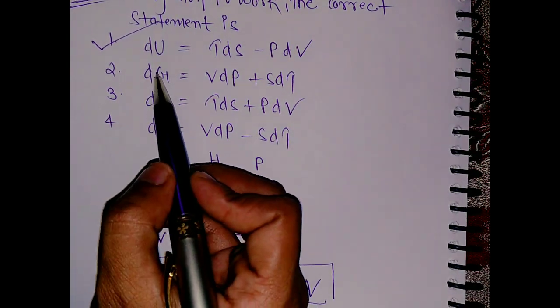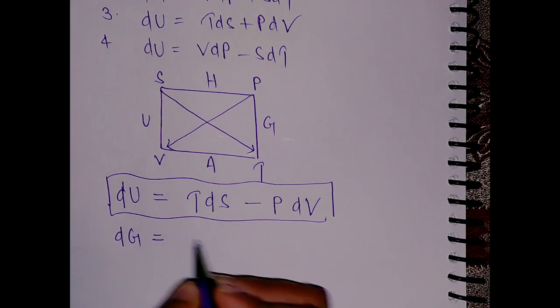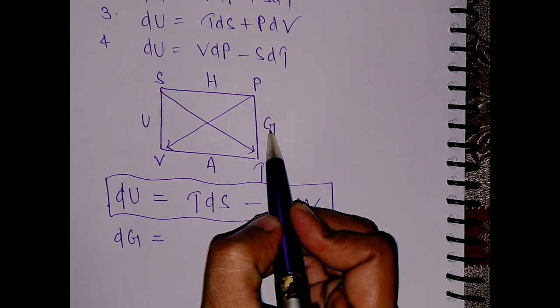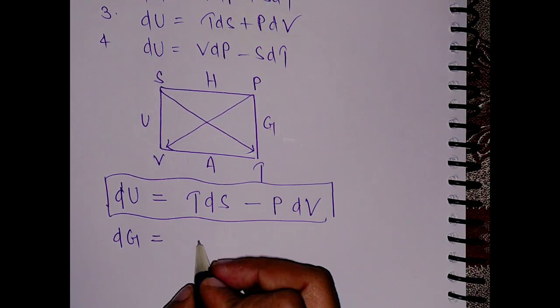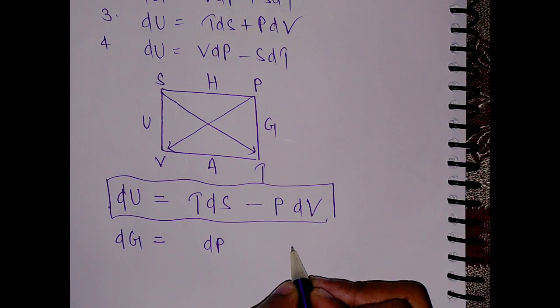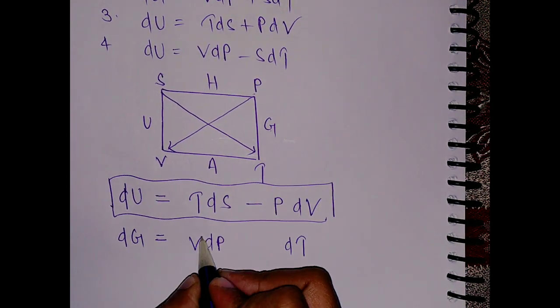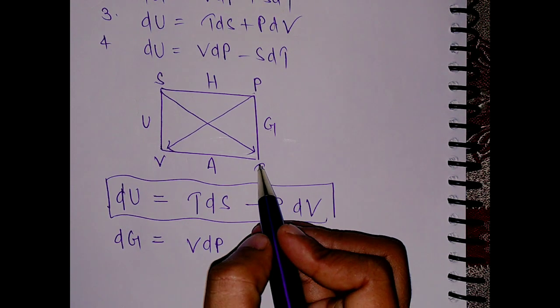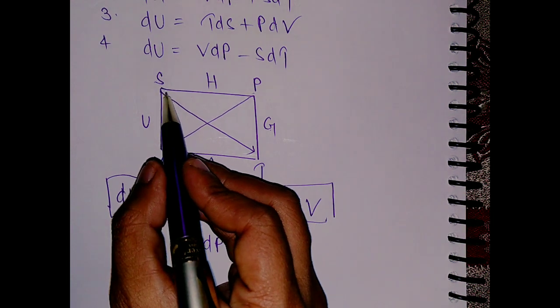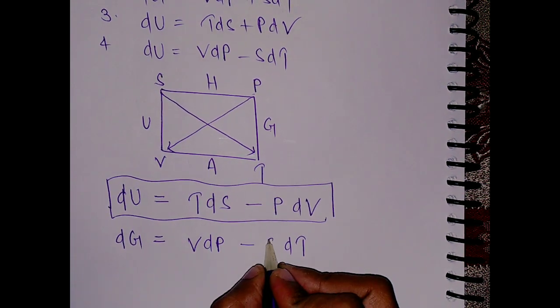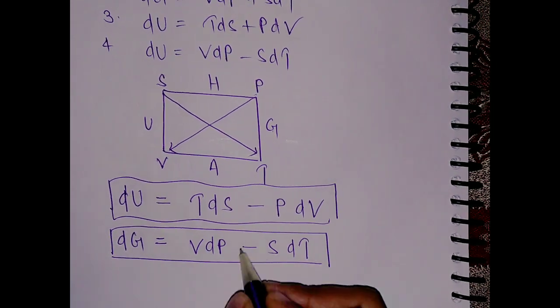Let's write for dG for practice purposes. For dG, the Gibbs free energy, the adjacent parameters are P and T, so write here dP and dT. From P the arrow is going to V, so write VdP. From T the arrow is ending on T itself, that means negative, coming from S, so minus SdT. This dG becomes VdP minus SdT.